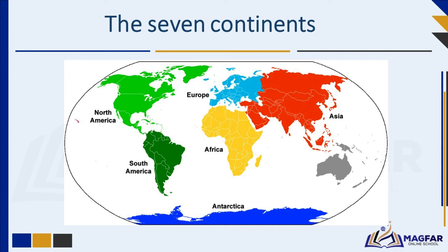Europe is known as the continent of history. You will find countries like France, Germany, and Italy, with landmarks like the Eiffel Tower and the Coliseum. Australia is also known as the land down under, known for unique wildlife like kangaroos.